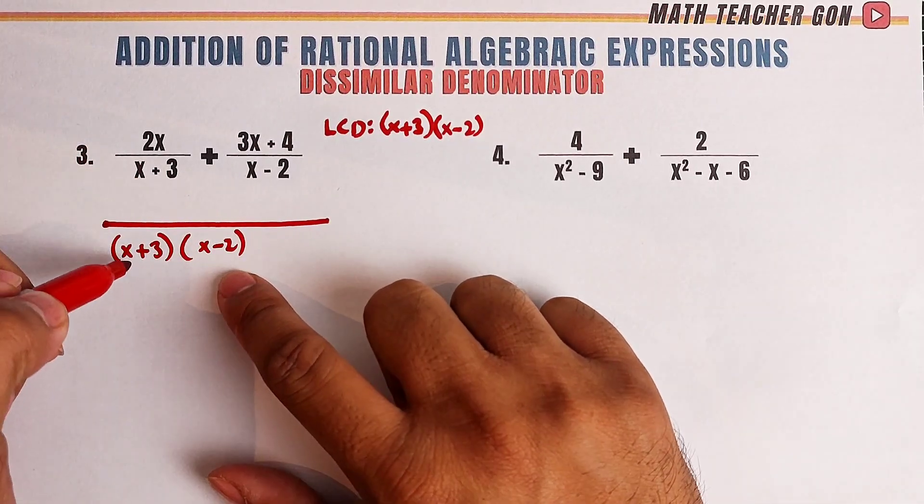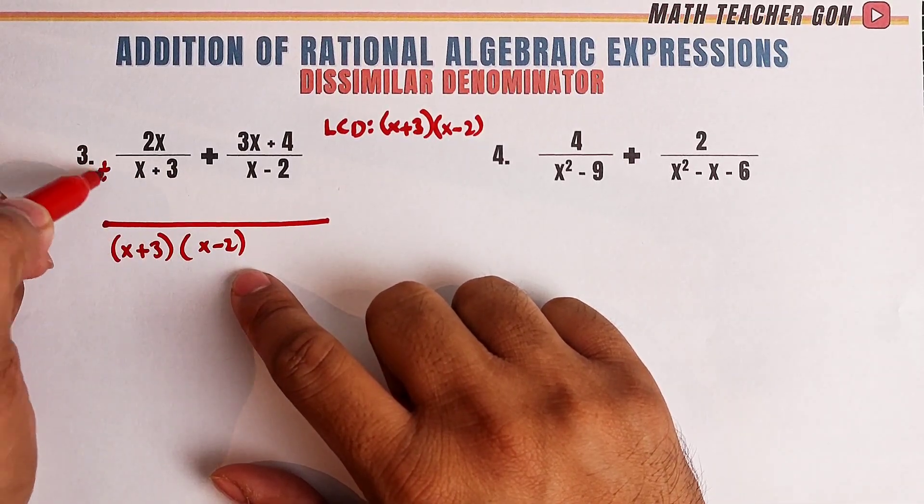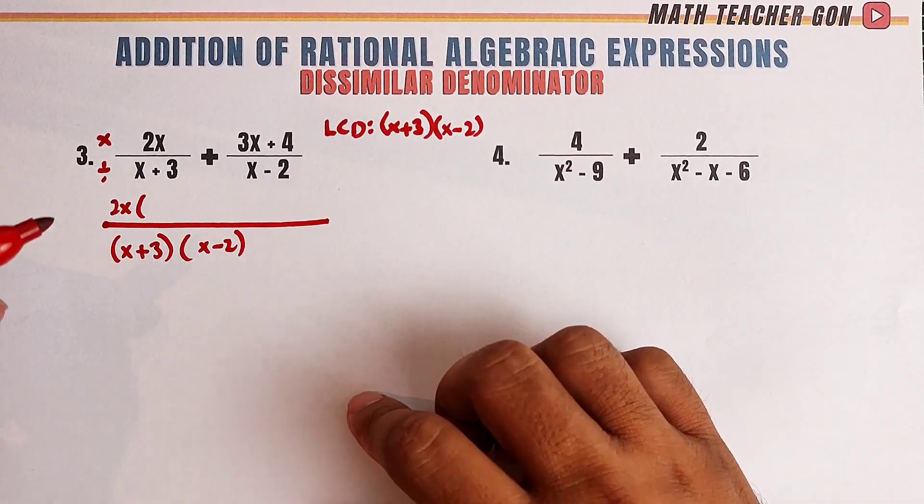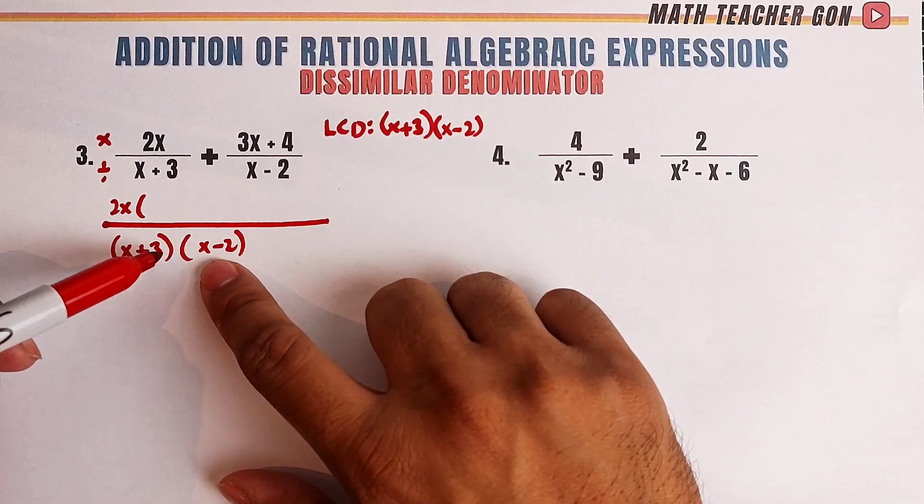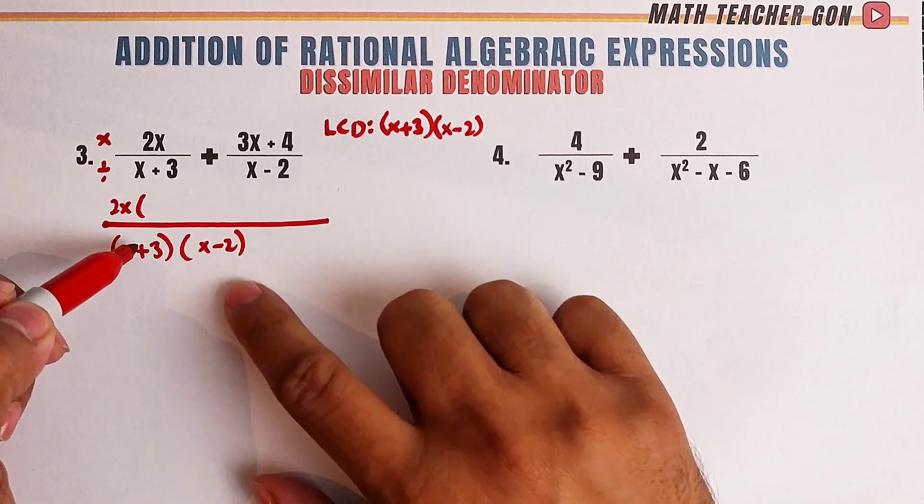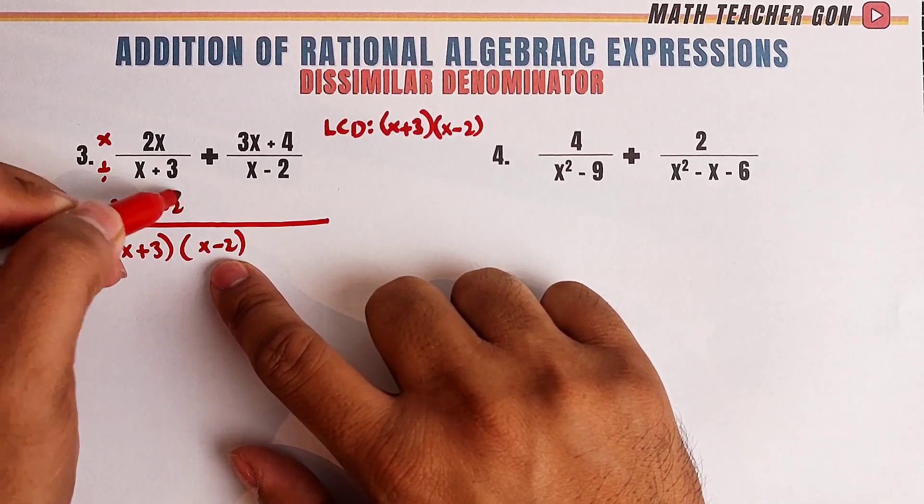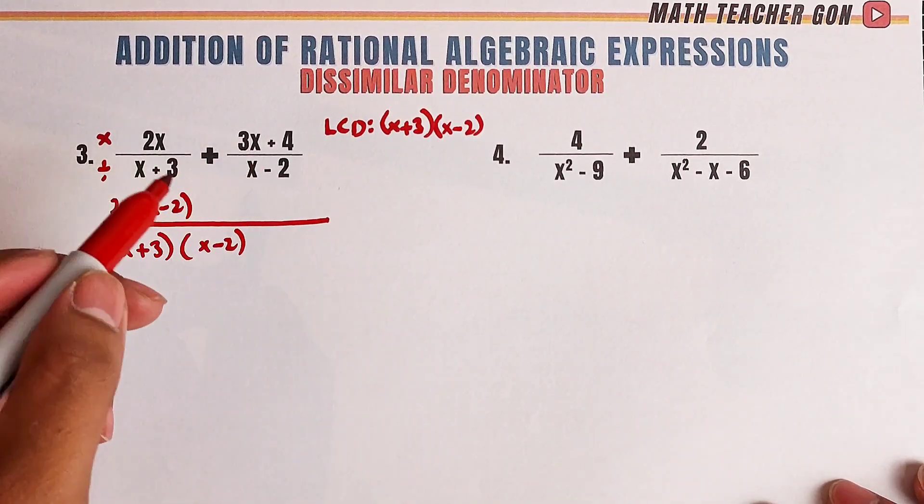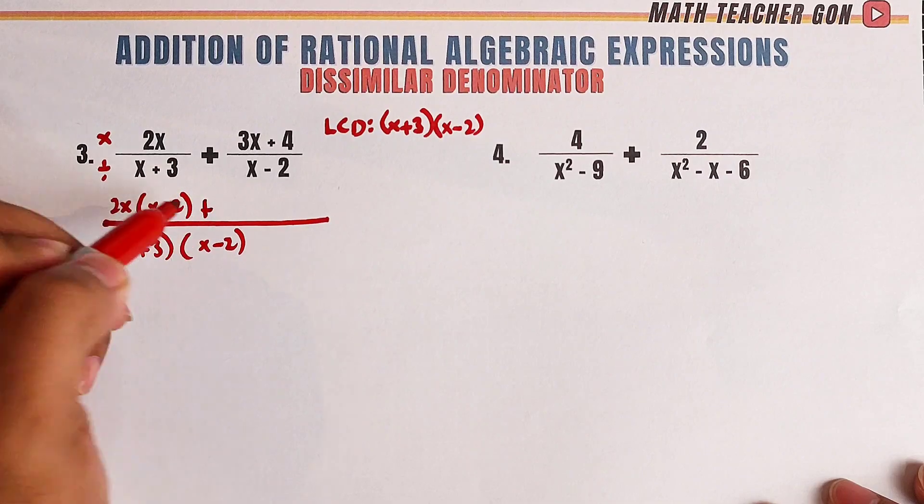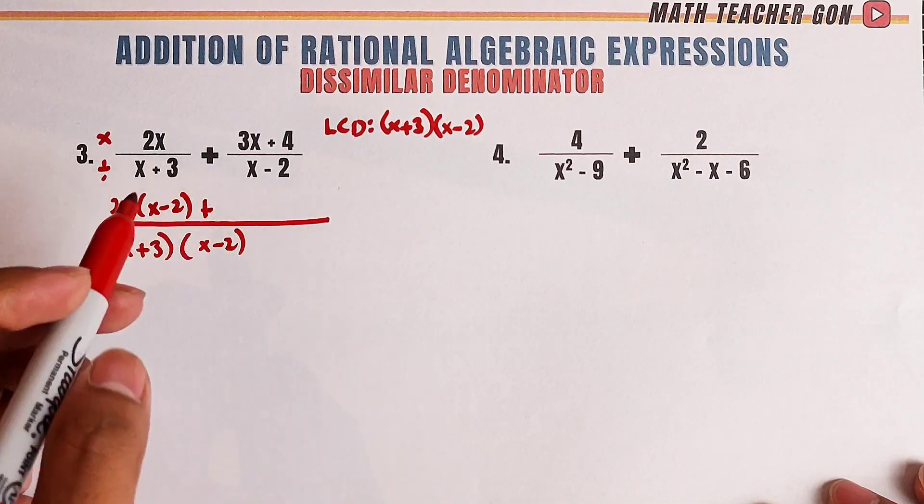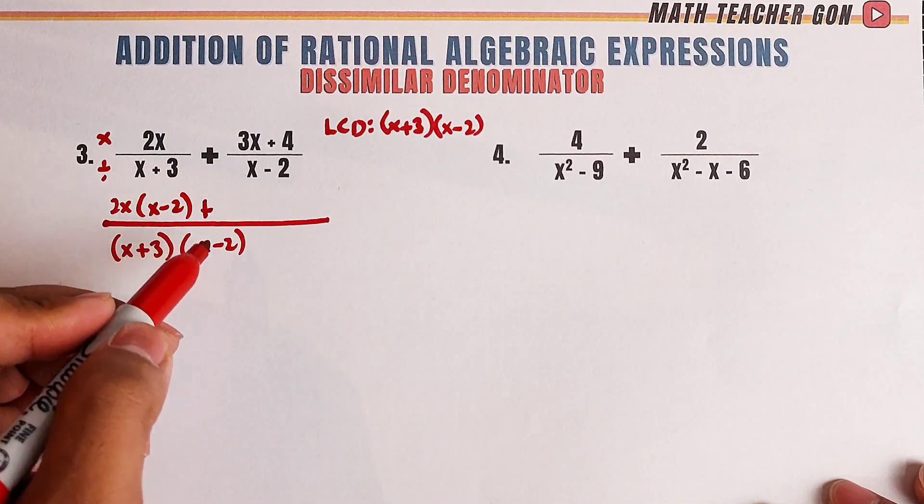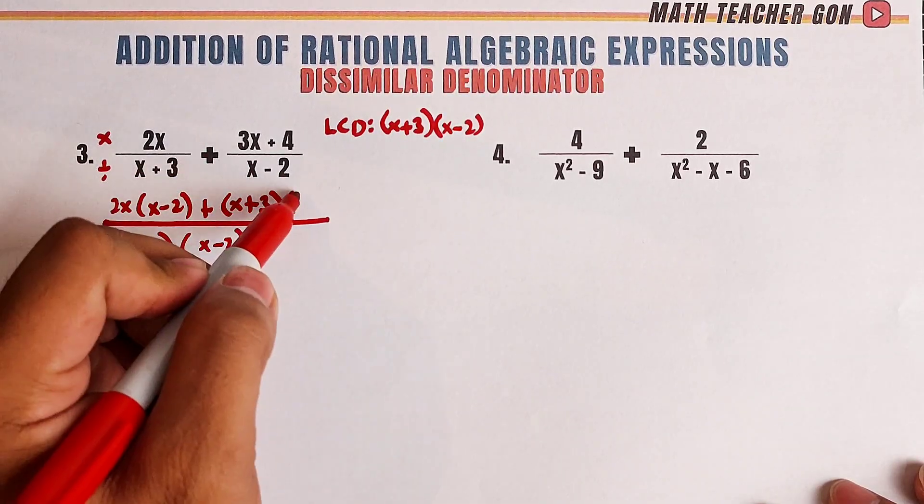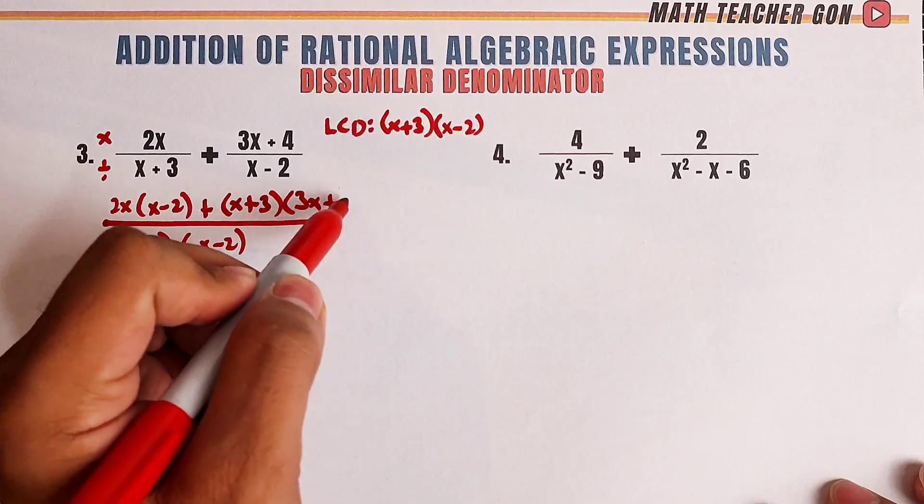These will cancel. This one divide this one. Then multiply by 2x. We have 2x times. Remember, we divided these two by x plus 3. These two will cancel. What remains is x minus 2. Now, for this one, we have plus, divide this using this one. These two will cancel. What remains are these two. x plus 3 times 3x plus 4.